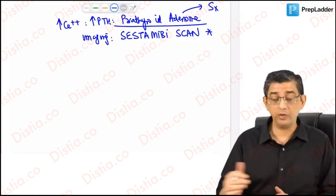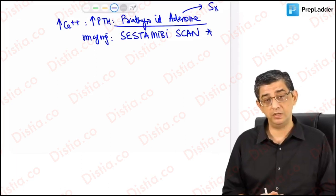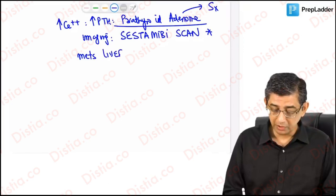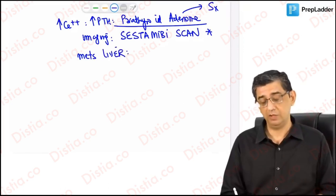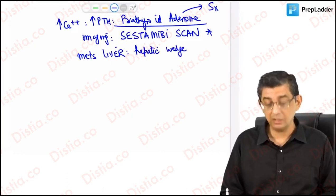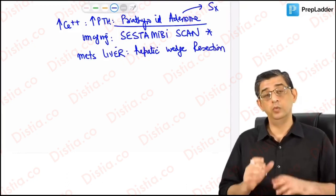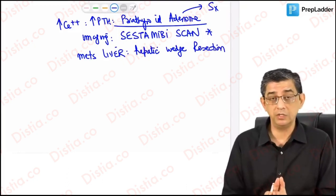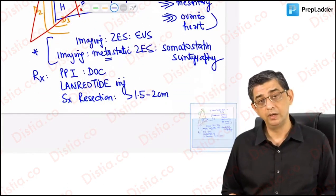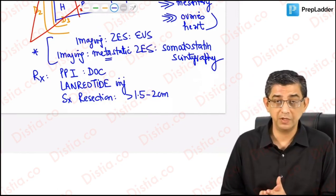If they're going to be mets to the liver, if there's mets to the liver, then we can go for hepatic wedge resection. But if it has extensively spread, then nothing much can be done for the patient. The prognosis in those circumstances will be relatively poor. Most questions on the management part will be happy to hear these two drugs from you: PPI and lanreotide. They usually will not go into the surgical domain because our objective is early identification.